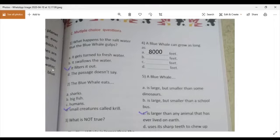Now exercise C. Multiple choice questions. First question. What happens to the salt water that the blue whale gulps? First one, it gets turned to fresh water. No. It showers the water. No. It filters it out. Yes. In our passage, we got the answer. It filters it out from its mouth.